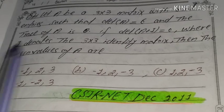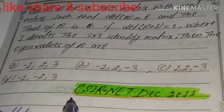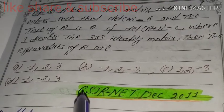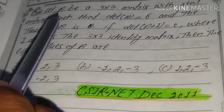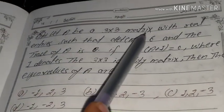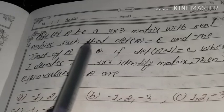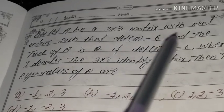Hi friends, today we are going to do CSIR NET December 2011 question. Let A be a 3x3 matrix with real entries such that determinant of A is equal to 6.